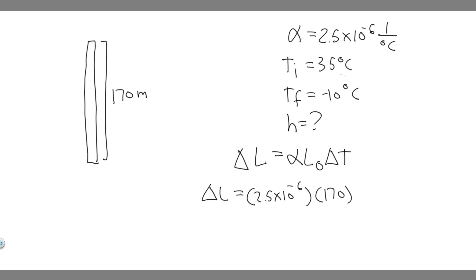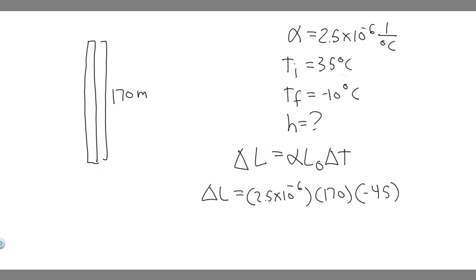We know we're going to start at 35 degrees Celsius and go to minus 10. The way you do this is you take the final minus the initial, so minus 10 minus 35, which becomes minus 45. It's going to be negative, which makes sense because we know it's going to shrink since it gets colder.